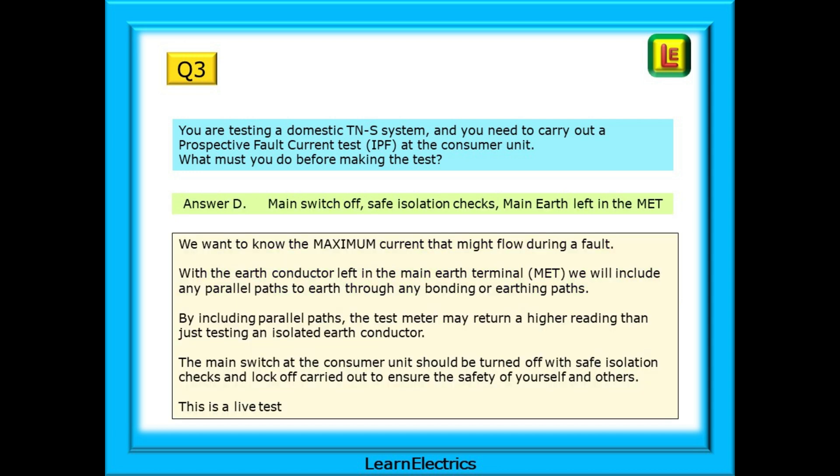Answer D is the correct choice. We should leave the main switch off, carry out safe isolation checks, and the main earth should be left in the main earth terminal or MET. Why? Because we want to know the maximum current that might flow during a fault. With the earth conductor left in the main earth terminal, we will include any parallel paths to earth through any bonding or earthing paths.